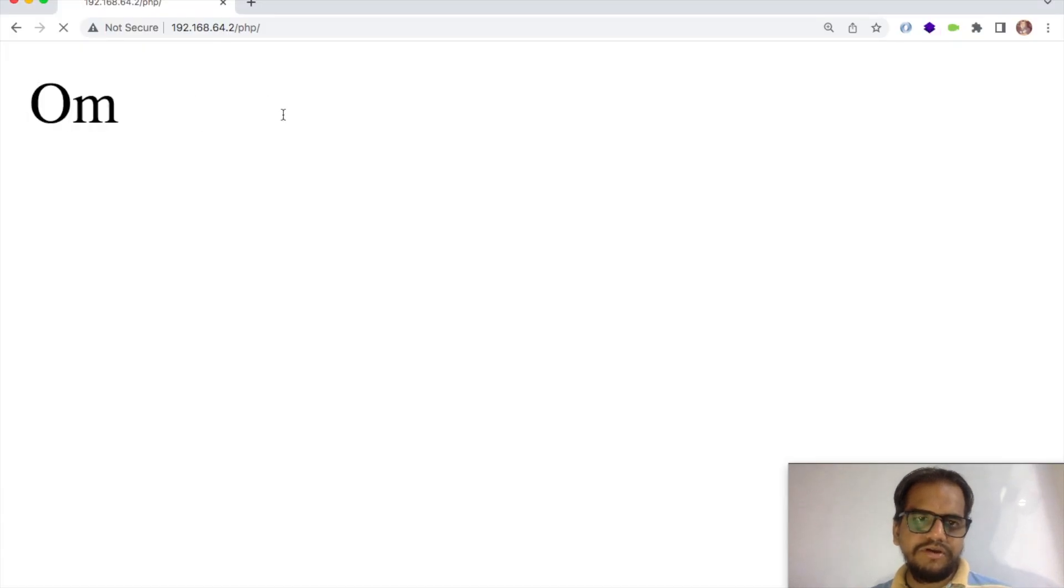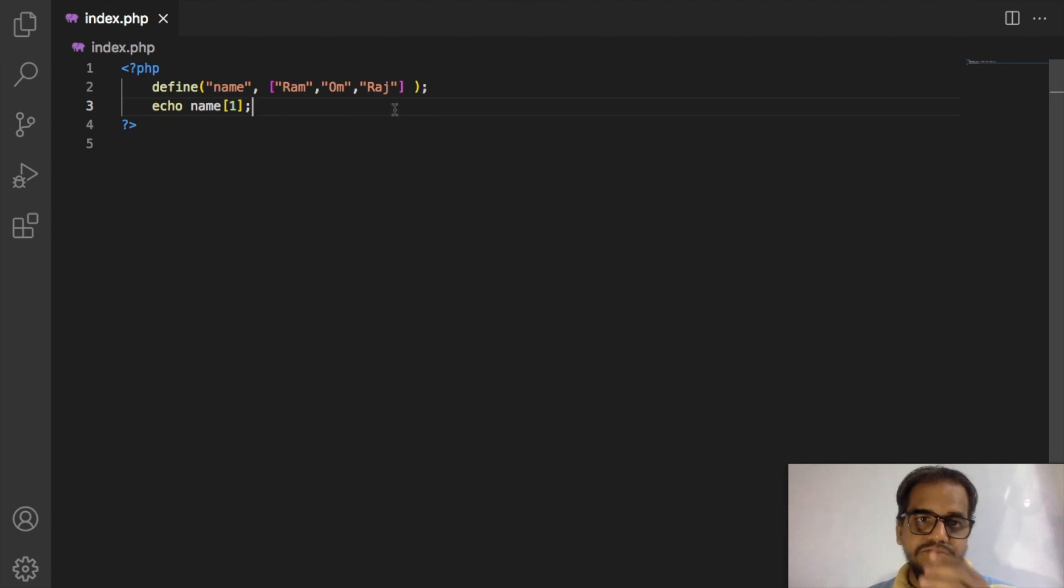Let's check the browser. Yeah, output is Om. So this is the way to write down the constants using the define function.